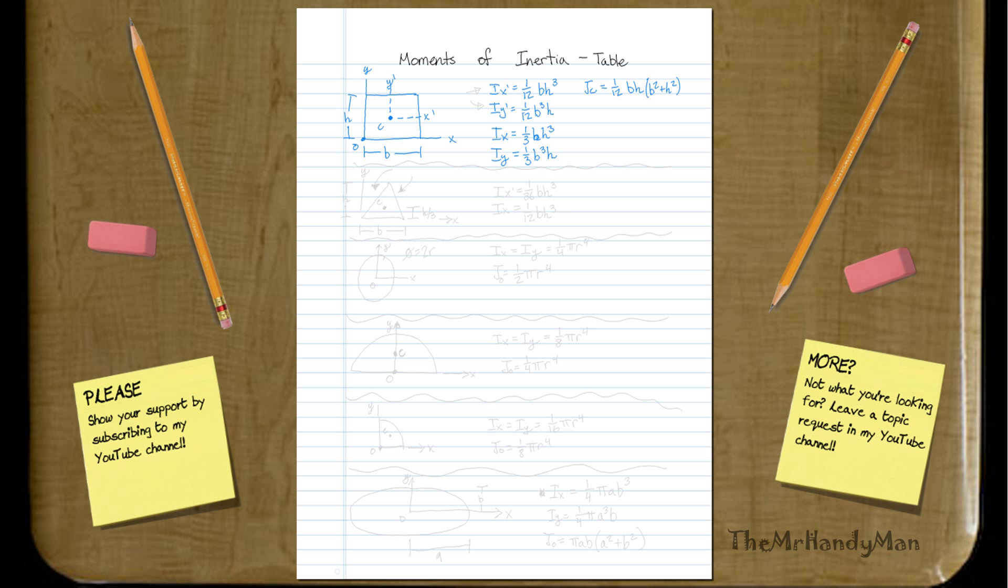And you can determine that just from looking at, just from doing the simple math and adding the inertia about the X prime and the inertia about the Y prime, adding those two together will give you the same result. Okay, so let's move on to triangles.